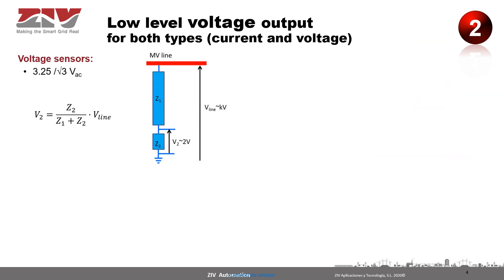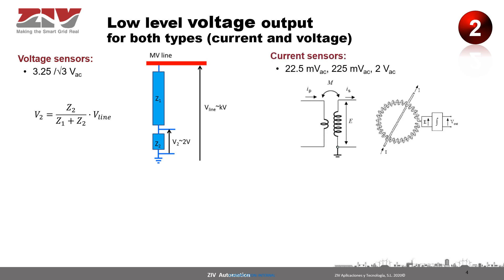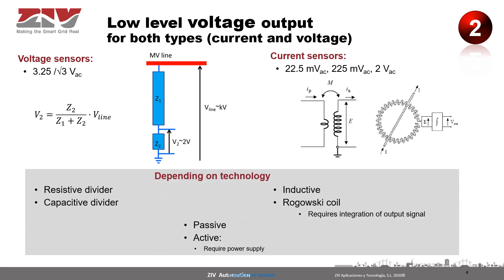The second thing we need to know about the sensors is that the output is a voltage output. In the case of the voltage sensors, the secondary nominal voltage is 3.25 divided by the square root of 3 volts, which is obtained by using a voltage divider that divides the voltage of the medium voltage line using impedances. Depending on the technology, for voltage sensors we have a resistive or a capacitive divider, depending on the kind of impedance used for the voltage divider.